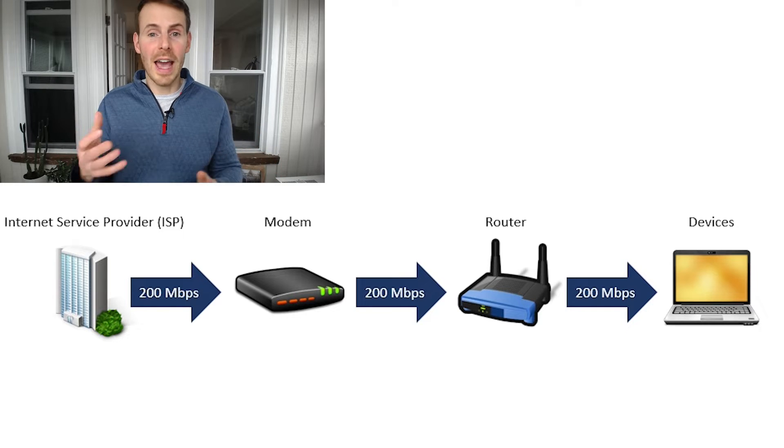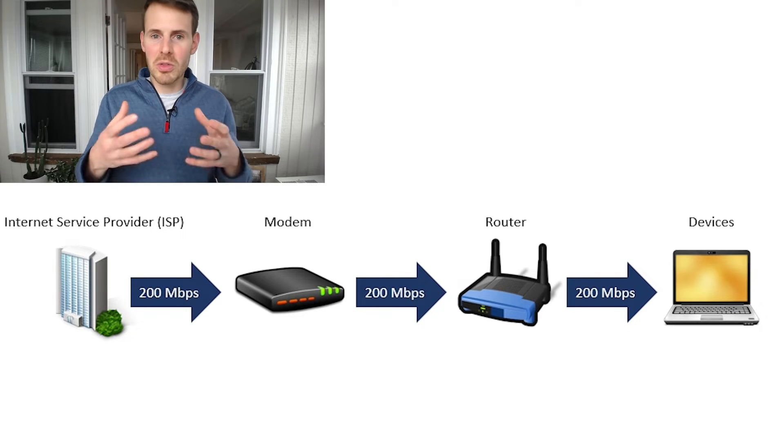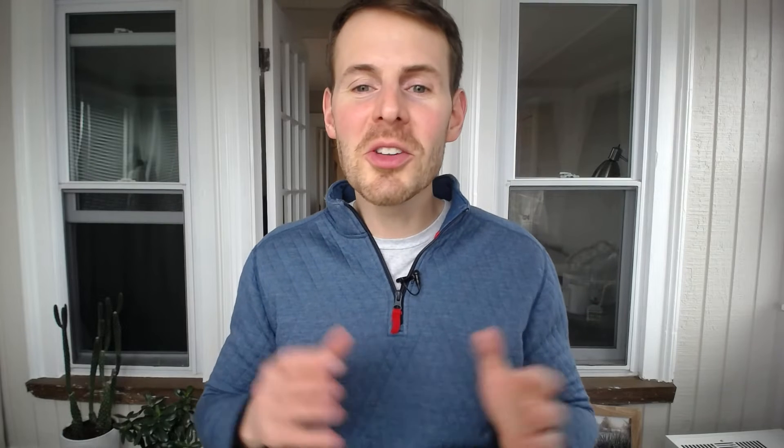As long as you're using Cat5e ethernet cables or above, you won't have any problems. For those not sure what category of ethernet cable they're using, I'll link to a video above that walks you through the steps for determining what category of ethernet cables you have. The other part of your home network to look at is the device you're running the speed test on — in particular, we need to identify how that device is connecting to the internet.